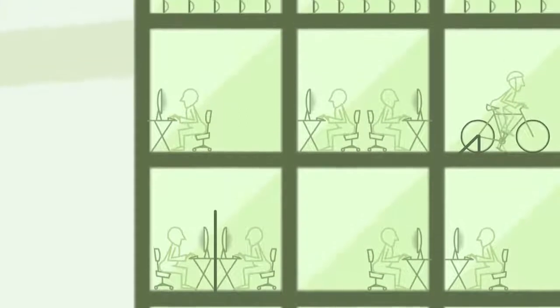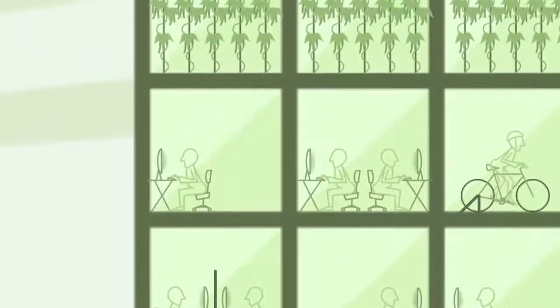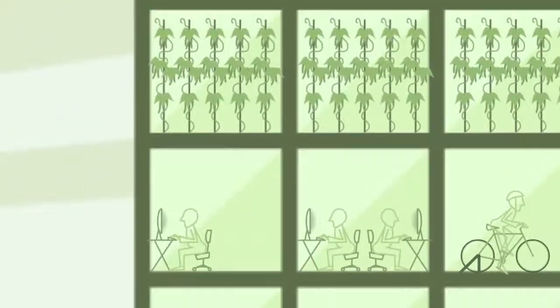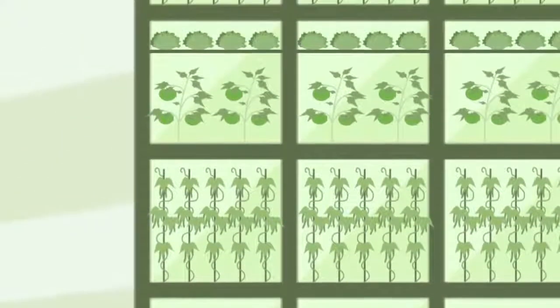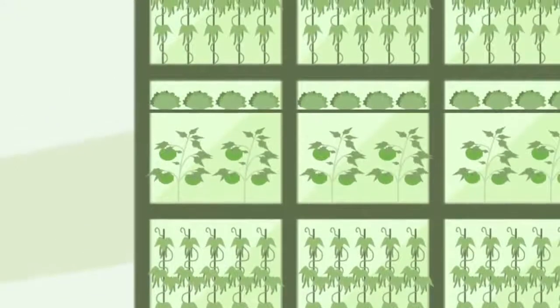It would bring together a host of emerging technologies by putting food production on the buildings we live and work in, to reduce land use, cool our urban heat sinks, and drastically reduce food transport costs.